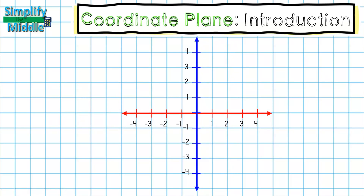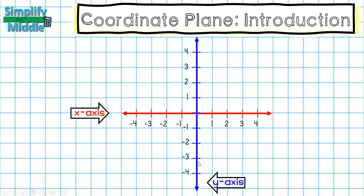When we combine our number lines, it's called the coordinate plane. On our coordinate plane, we no longer call this a horizontal number line — instead we refer to it as the x-axis. And this number line is no longer just a vertical number line; it is the y-axis.